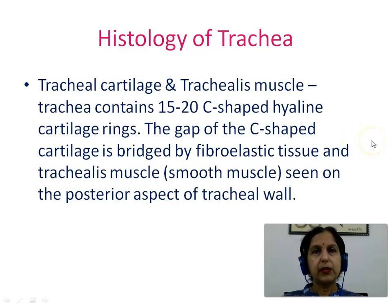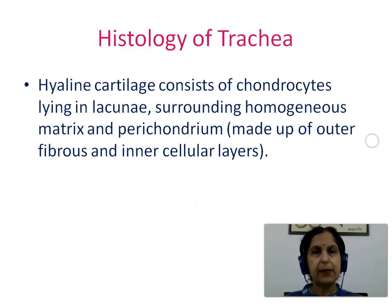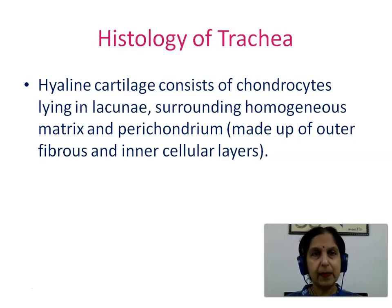We then see the next layer, which is the tracheal cartilage and trachealis muscle. The trachea contains 15 to 20 C-shaped hyaline cartilage rings. The gap of the C-shaped cartilage on the posterior aspect is bridged by fibroelastic tissue and trachealis muscle, which is made up of smooth muscle fibers. Hyaline cartilage consists of chondrocytes lying in lacunae, seen as groups called isogenic cell nests, surrounded by a homogeneous matrix and an outer perichondrium made up of outer fibrous and inner cellular layers.